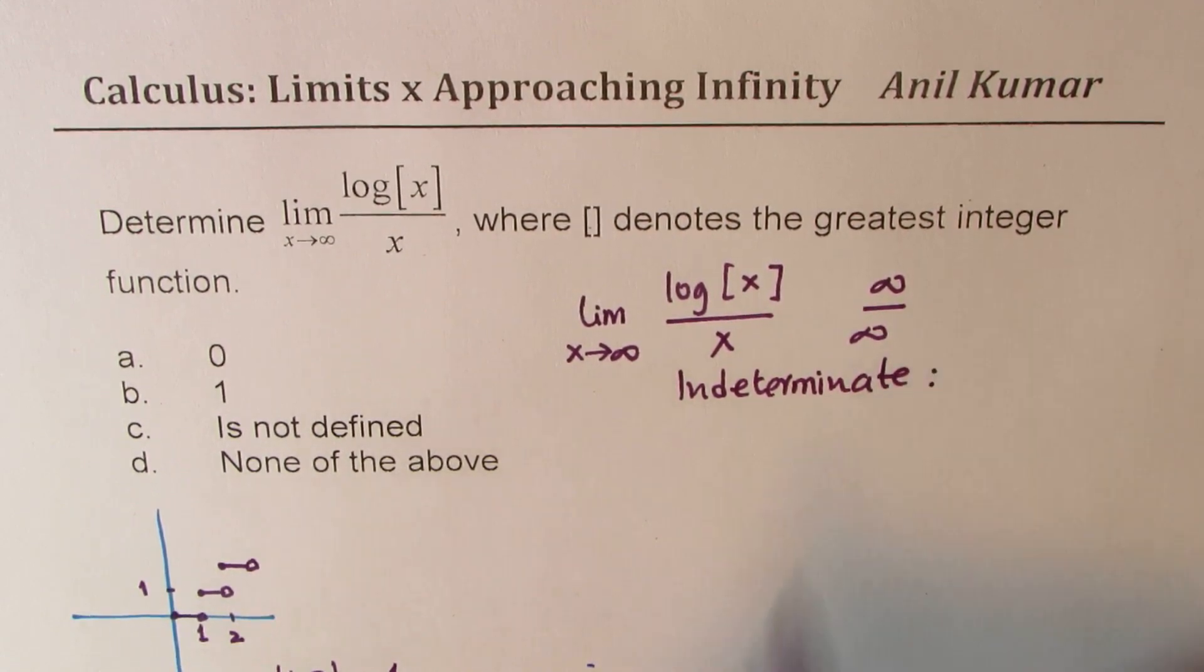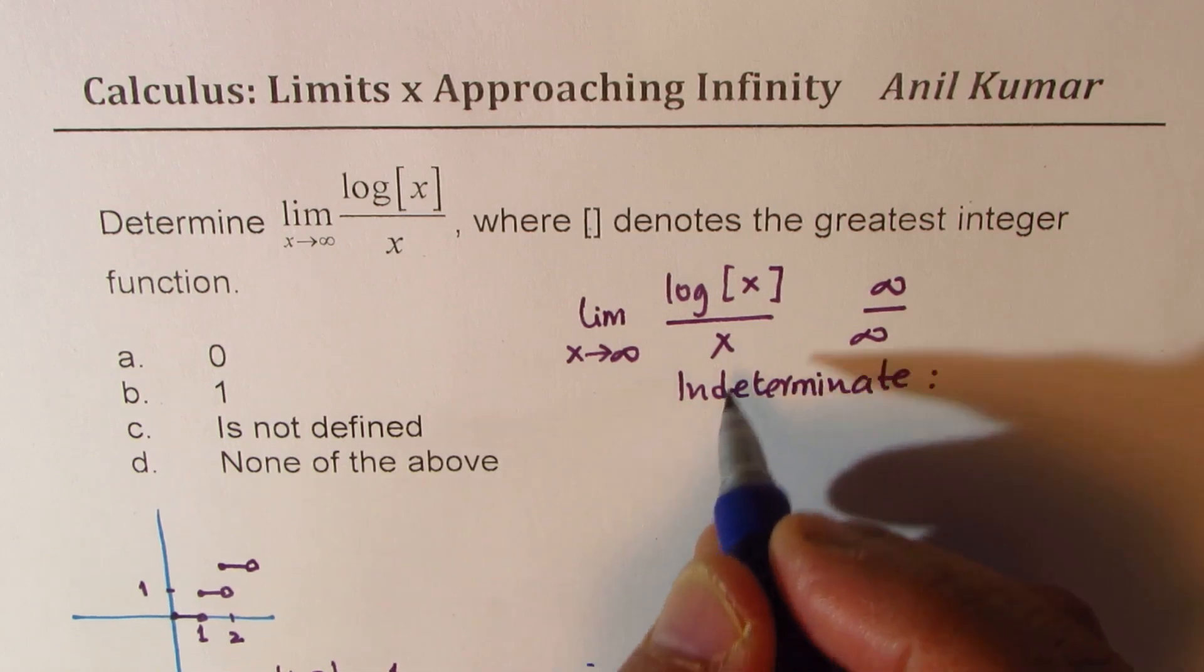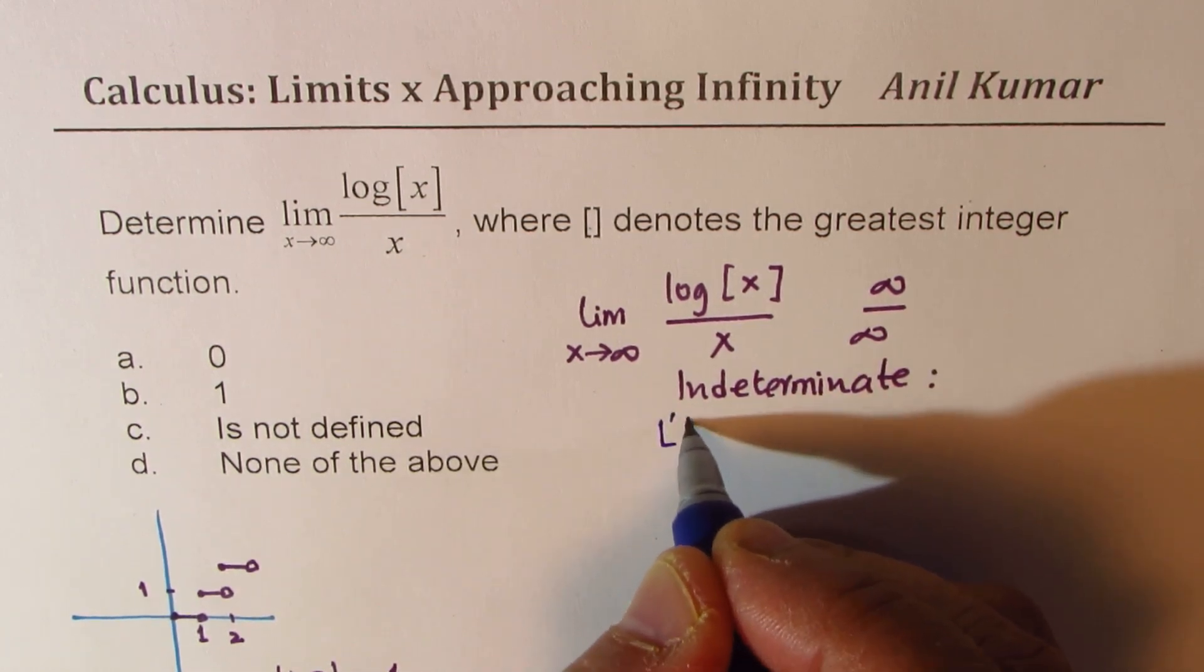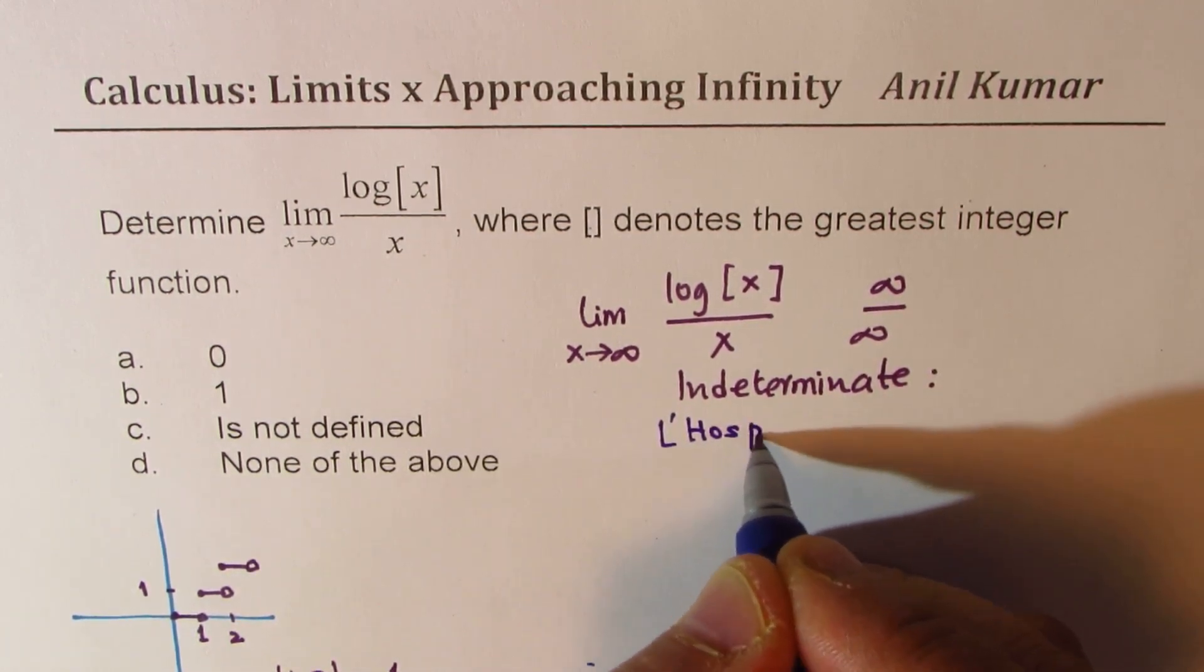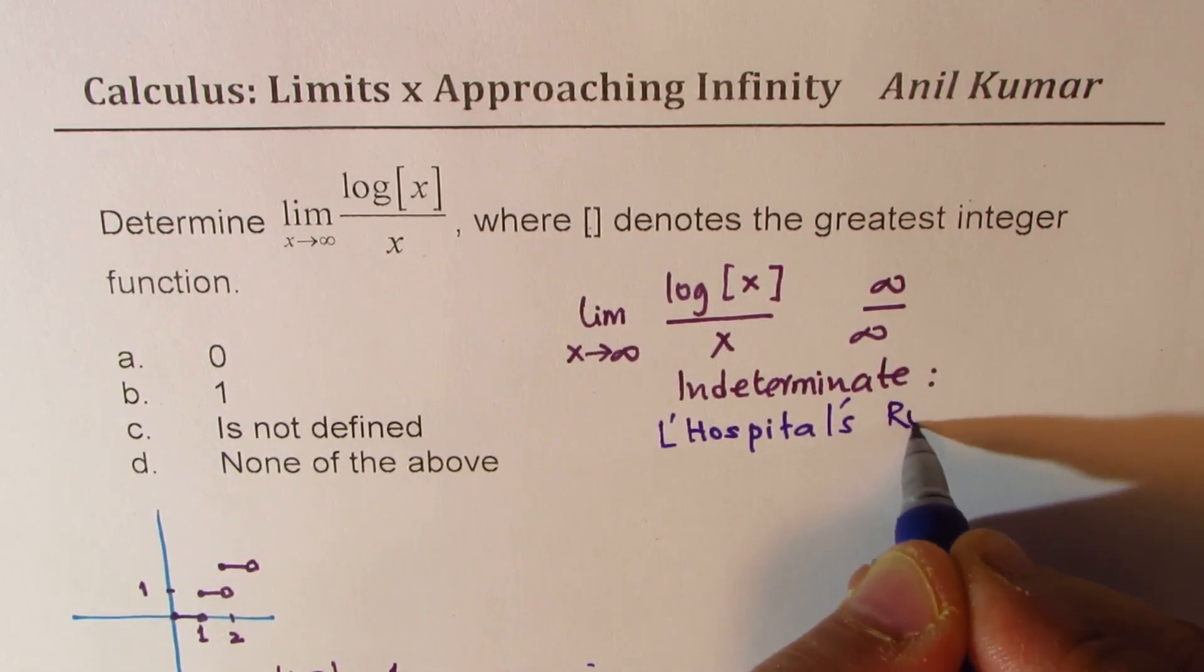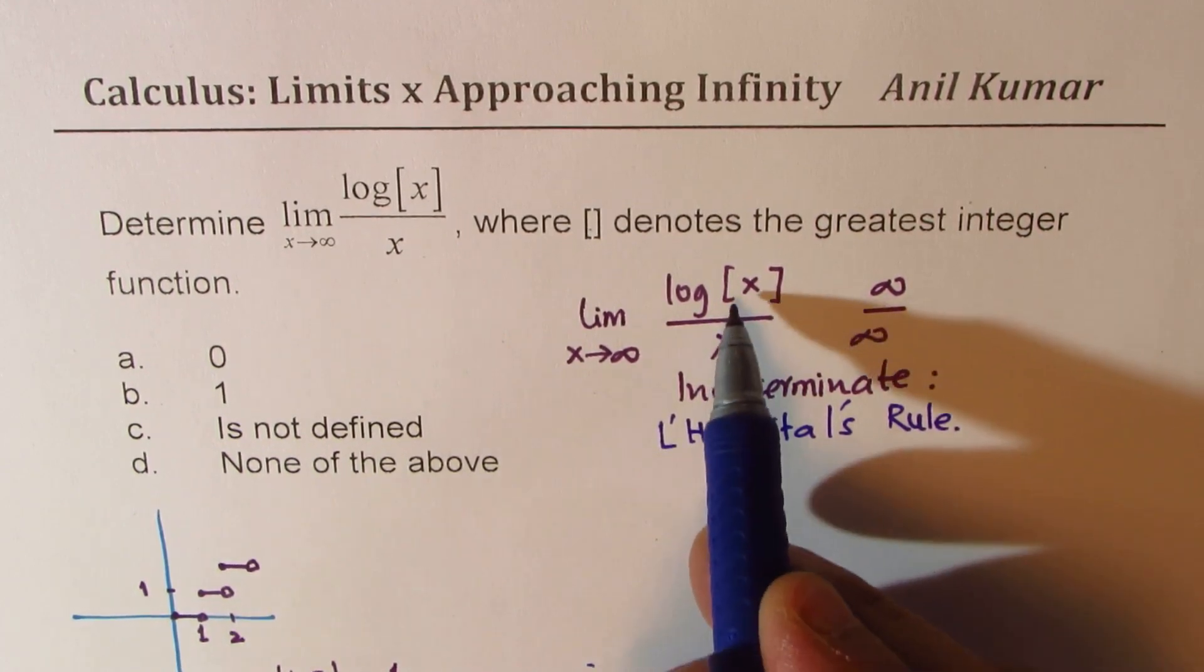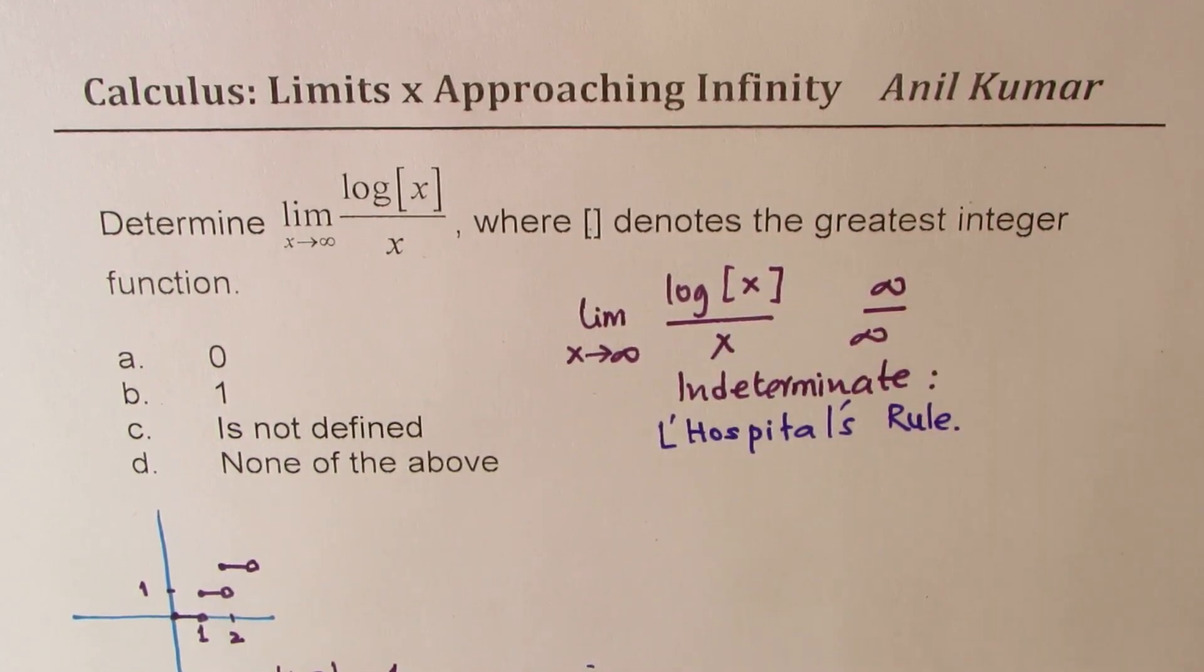Now to solve such limit questions, we will normally use L'Hopital's rule. I hope most of you are familiar with this. In this case, we could use L'Hopital's rule. That is to say, we can find derivative of numerator and denominator and then find the limit.